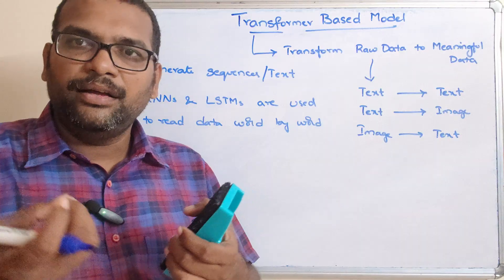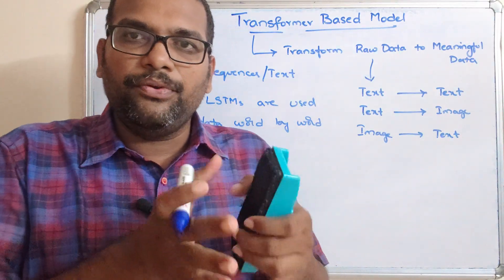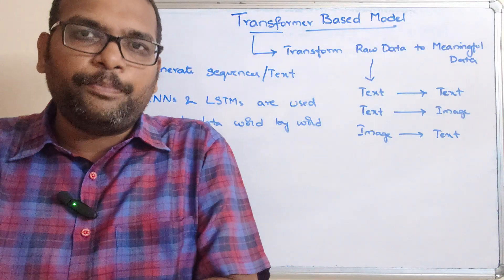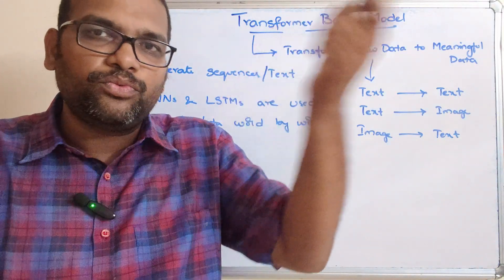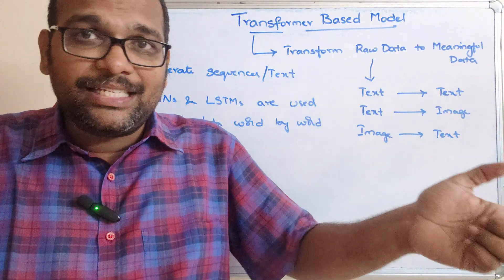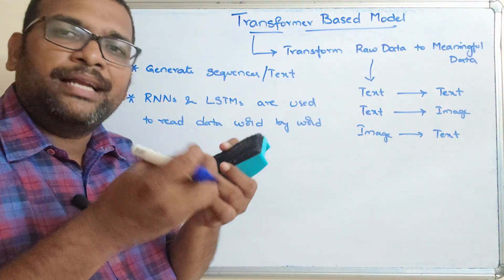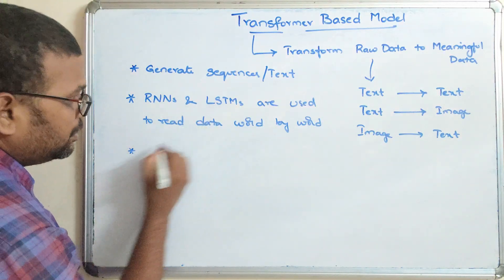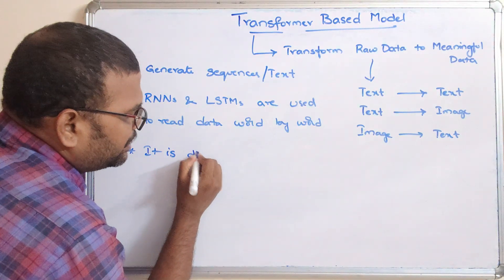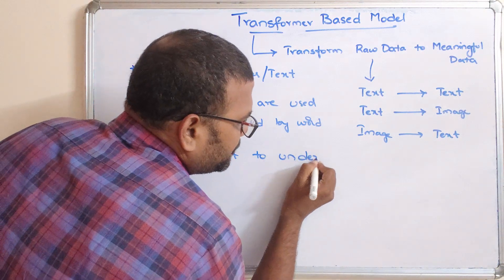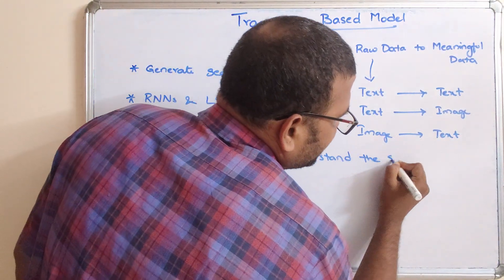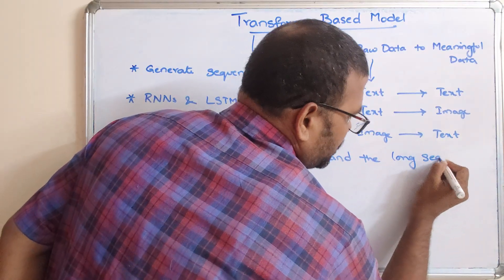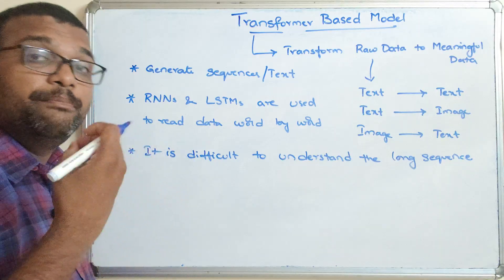For example, if you start reading a book and you read some five pages, and then the process of reading continues and now you are reading around the 100th page, you might find it difficult to remember the things you read in the first five pages. Similarly, in the longest sequences, it will be very difficult to understand the meanings. So that difficulty — understanding a long sequence when reading word by word — is what we want to avoid.